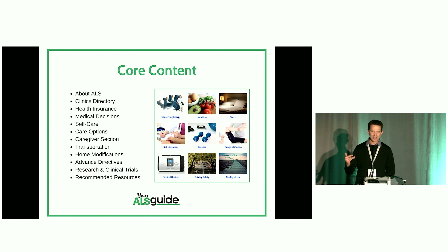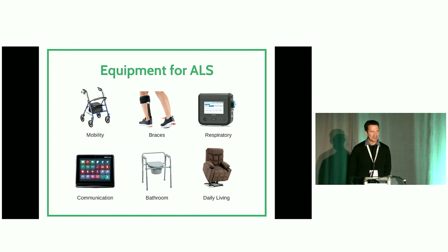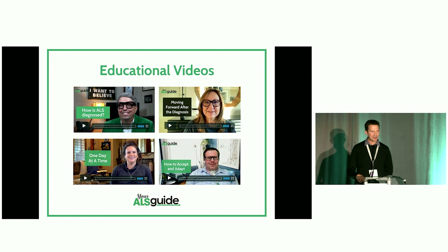We have a very in-depth section on equipment, always trying to point people to loan closets to save them money. We talk about insurance and what you need to do to get certain pieces of equipment. One of the things that really distinguishes Your ALS Guide is our video content. We currently have about 200 videos throughout the site, often two to five minute clips — with family members, people living with ALS, and professionals of all sorts. We'll have about 300 videos on our site and YouTube channel early next year. The text is the core part of the site and the videos are complementary.